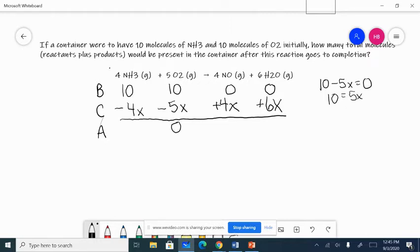So simple algebra and we'll solve for X and it's going to be 2. So the amount of NH3 is going to be 10 minus 4 times 2. So 10 minus 8 and we'll have 2 molecules of NH3 left. We're going to produce 0 plus 4x or 0 plus 4 times 2 for 8 molecules of NO and 6 times 2 or 12 molecules of H2O.